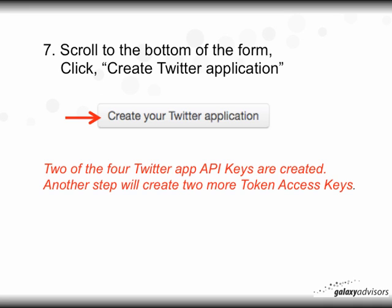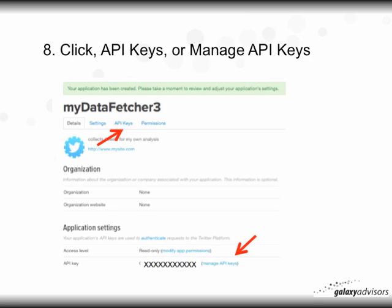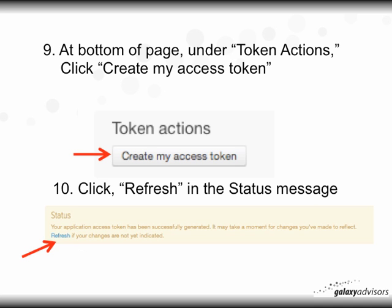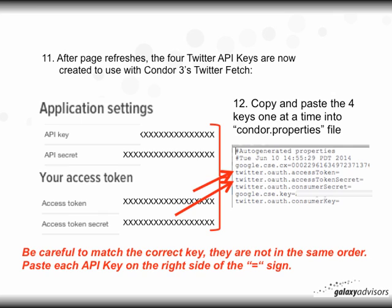At this point two of the four Twitter API keys are created. Another step will create two more access token keys. Click 'API Keys' or 'Manage API Keys' as shown in the form — both options take you to the same location. At the bottom of the page under 'Token Actions,' click 'Create My Access Token.' After that's done, you'll see a status message. Click the blue 'Refresh' link to refresh the page so you can see your access token keys. After the page refreshes, all four Twitter API keys are now created to use with Conor3's Twitter fetch.